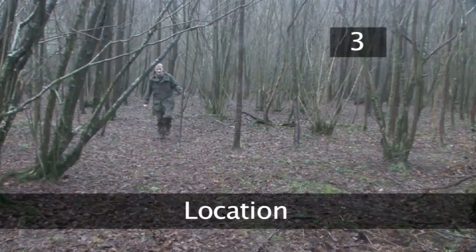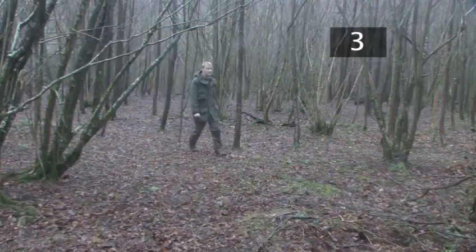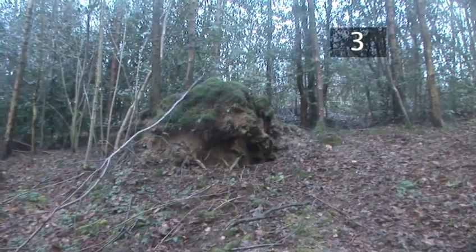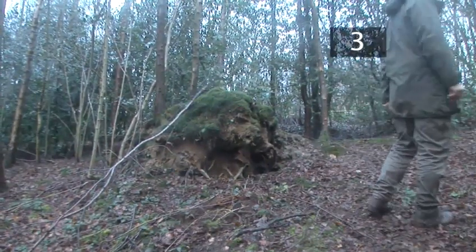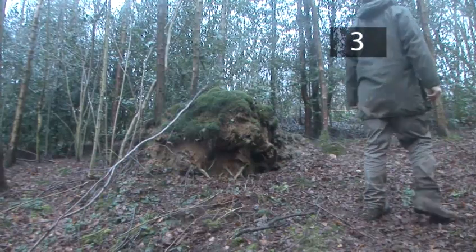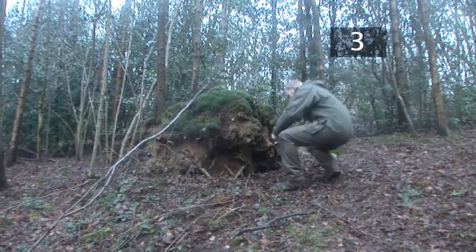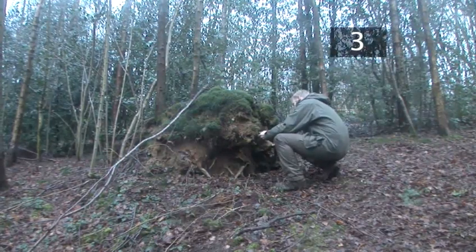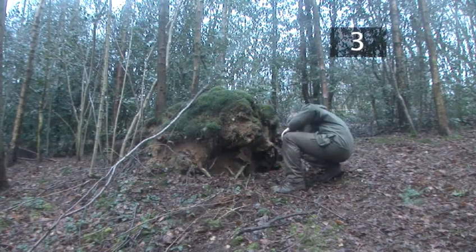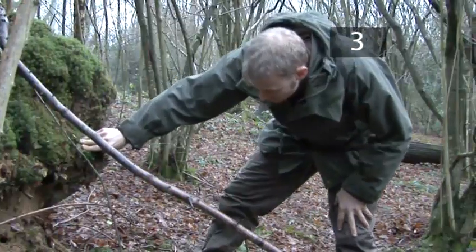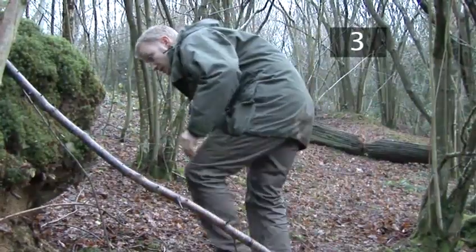Step 3: Location. For this particular shelter, you will need to find the right structure to lean your branches against. An uprooted tree is perfect, especially if it has a hollow where the roots once were, as this will give you more space inside. Be sure that it is dry, as sometimes these hollows fill with water.